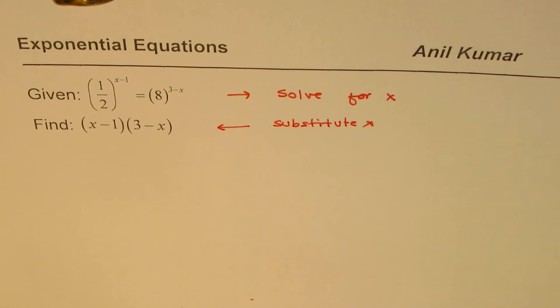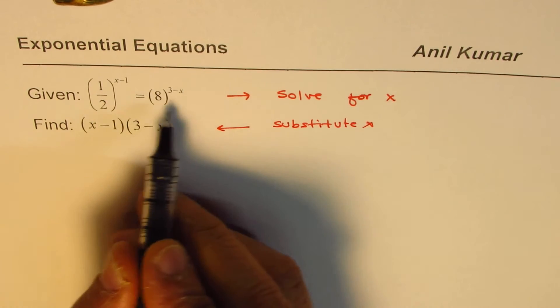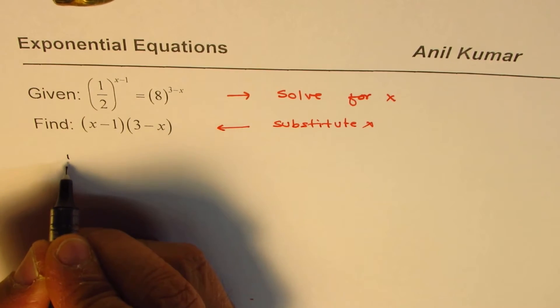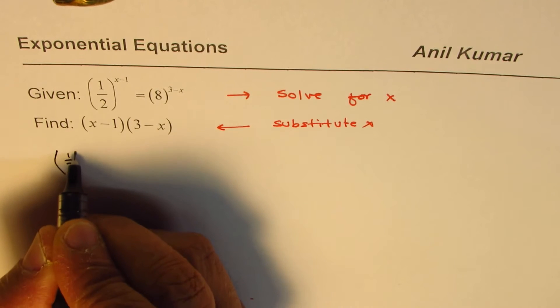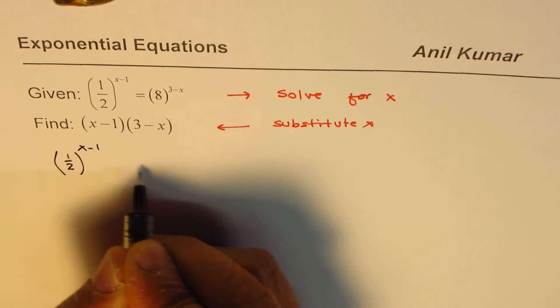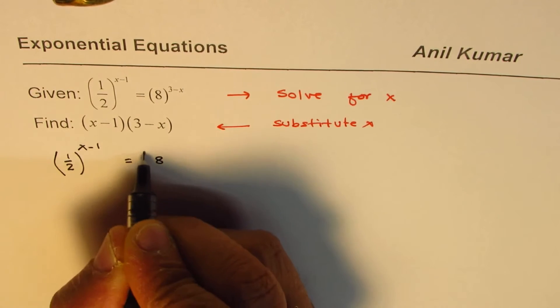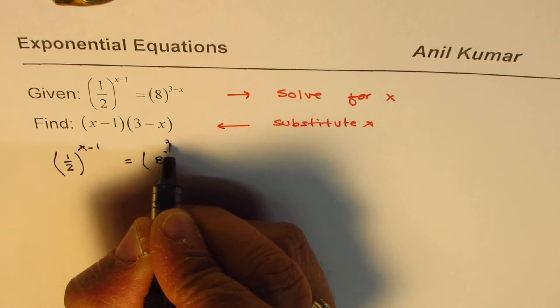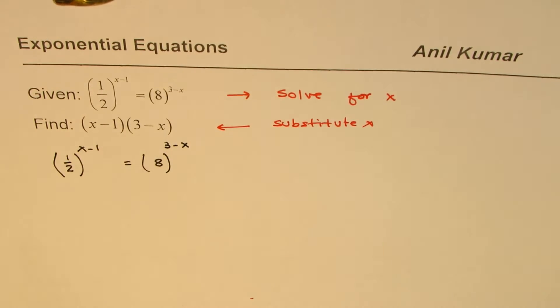Let us see how to solve. This is interesting. It is (1/2)^(x-1) = 8^(3-x). Now to solve exponential equations, what we are looking for is a common base. So it is important to have a common base.